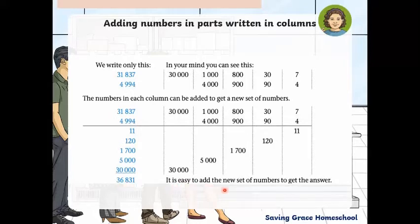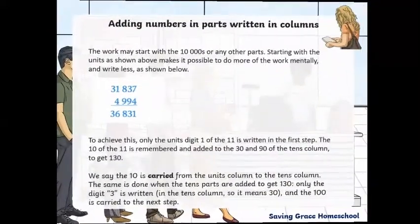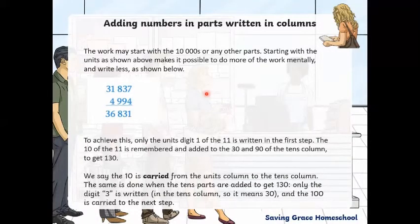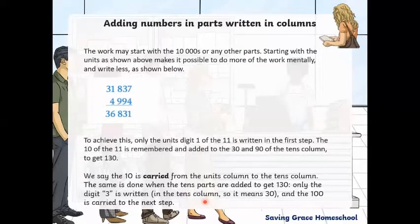The work may start with the ten thousands or any other part—it could start higher with the hundred thousands or millions, or even start with the tens or units depending on how small or big the number is. Starting with the units shown above makes it possible to do more of the work mentally and write less. To achieve this, only the unit digit 1 of the 11 is written in the first step. The 10 of the 11 is remembered and added to the 30 and 90 of the tens column to get 130. We say the 10 is carried from the units column to the tens column. Only the 3 digit is written in the tens column, so that means 30, and the 100 carries to the next step.